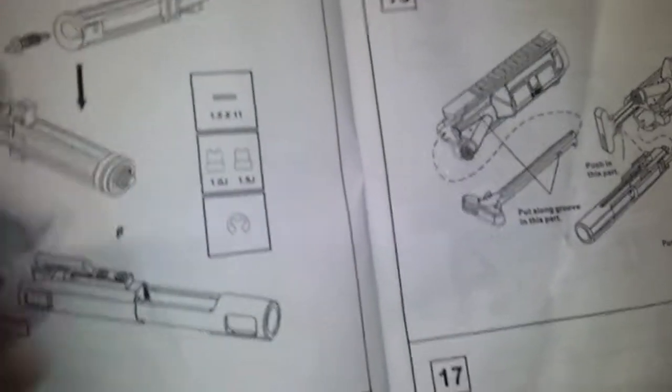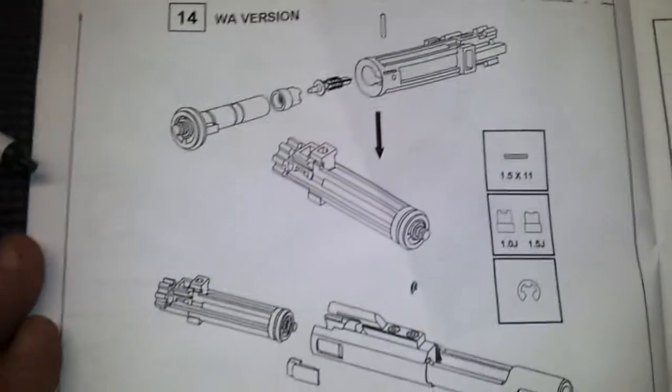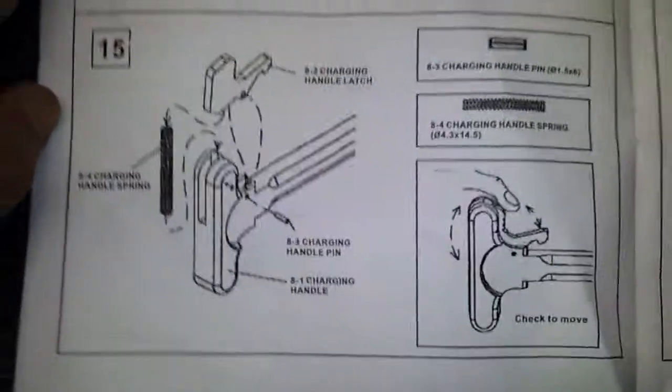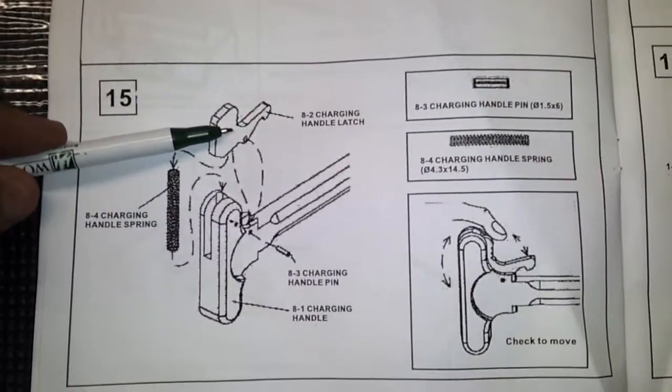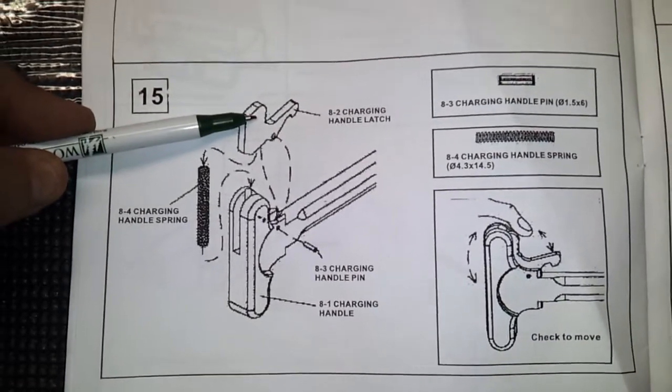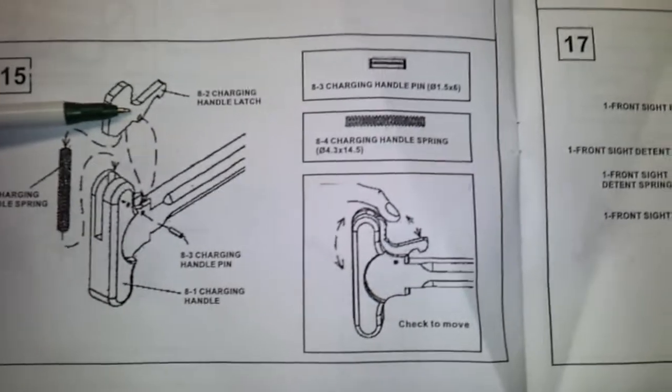These right here are your valve blockers, similar to the items that King Arms puts out, two of them. It's kind of like an NPAS, it's a negative pressure system. On your challenge kit, this piece right here is going to break eventually, you need to replace it. I have them on Airsoft RX made of steel.